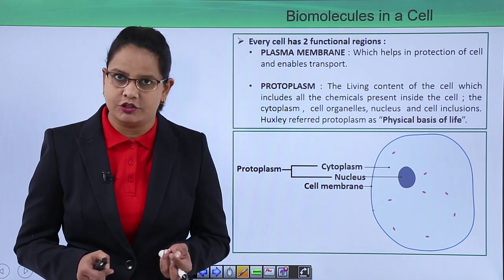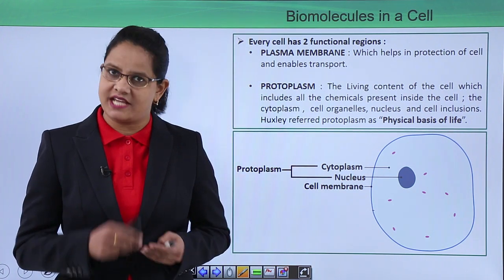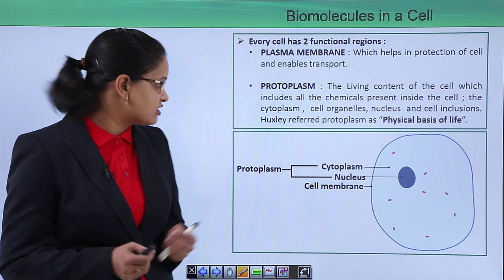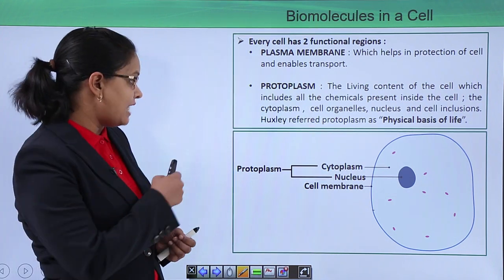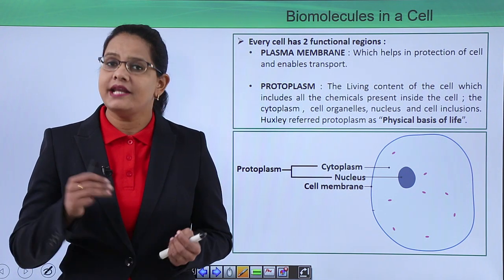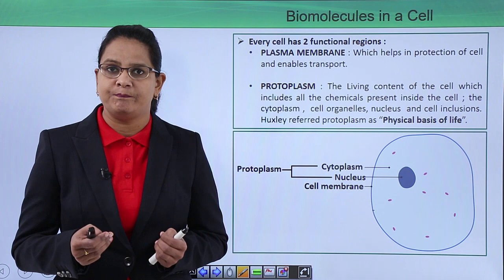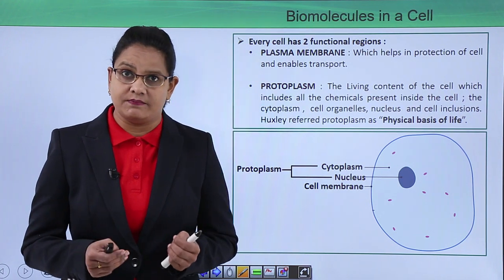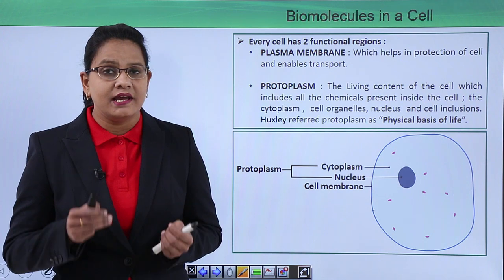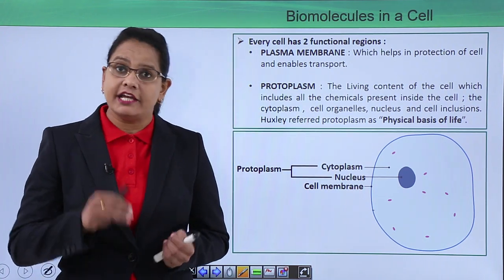First, the cell. All of us know the cell is the structural and functional unit of life, so all living organisms are made up of cells. The cell has two major functional regions as we can see in the figure: the cell membrane, which forms a protective barrier around the cell and helps in transport of substances in and out of the cell, and the protoplasm.